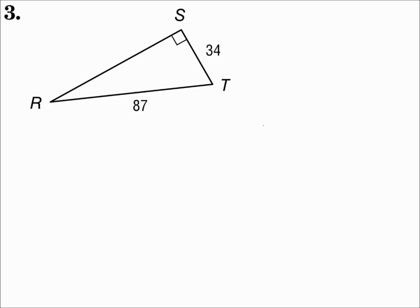Remember: when you're working with a triangle, identify the sides you're using — opposite, adjacent, or hypotenuse — determine which trig function to use — sine, cosine, or tangent — and then substitute the values into the formula and solve for what you're looking for. Again, we're looking for angle T here. Let's identify the sides we have.